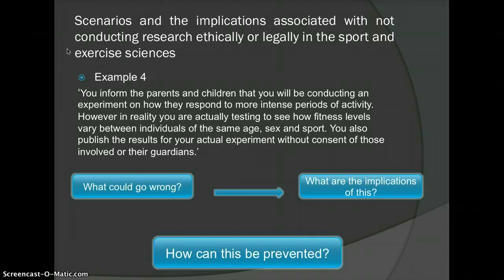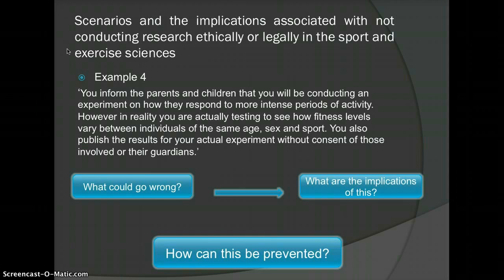How can this be prevented? Inform the parents and children of the actual experiment and ask for permission to publish. If no consent is given, then publish with anonymous data. This will mean confidentiality rules are not broken and consent is obtained, meaning no prison sentence, fines, nor will your credibility or accreditation be questioned. Emotional harm may still affect the child due to the results, but this can be avoided by ensuring the child does not see the results of the experiment.